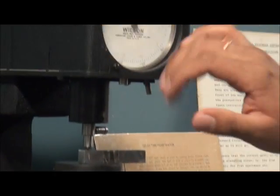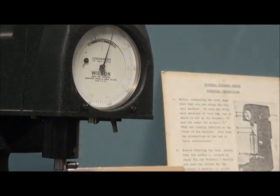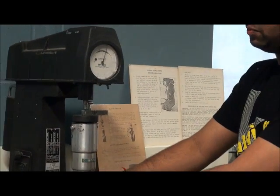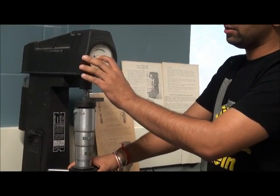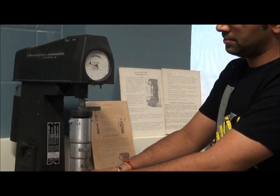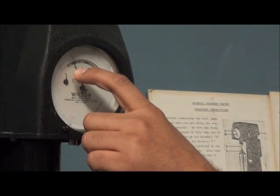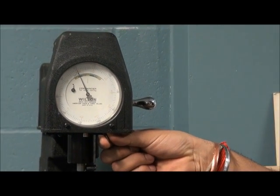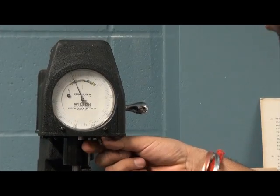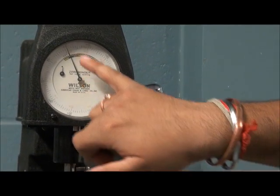Now, on the dial there are two needles, one is small and one is big. When we move this wheel, the small needle will move. And we have to move the scale until the small needle is pointed towards the black dot. And now we can see that the small needle is pointed towards the black dot and the bigger is pointed towards the zero.